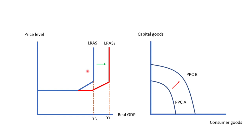On the Keynesian aggregate demand and aggregate supply diagram, it would look like this. The long-run aggregate supply curve shifts from LRAS to LRAS1, resulting in an increase in potential output from YFE to Y1. On the PPC on the right, we are showing the same change by shifting the PPC curve outwards from PPCA to PPCB.